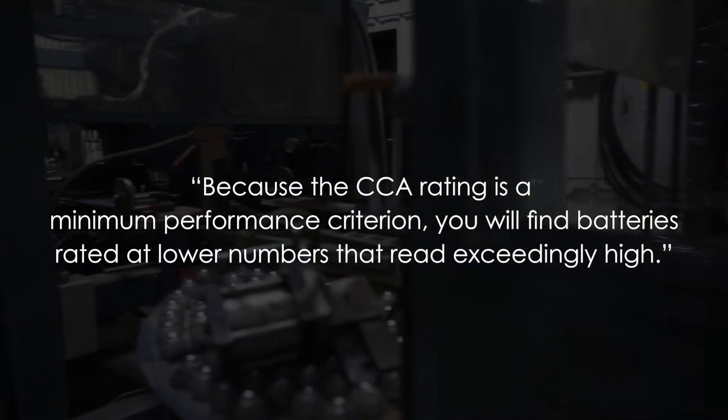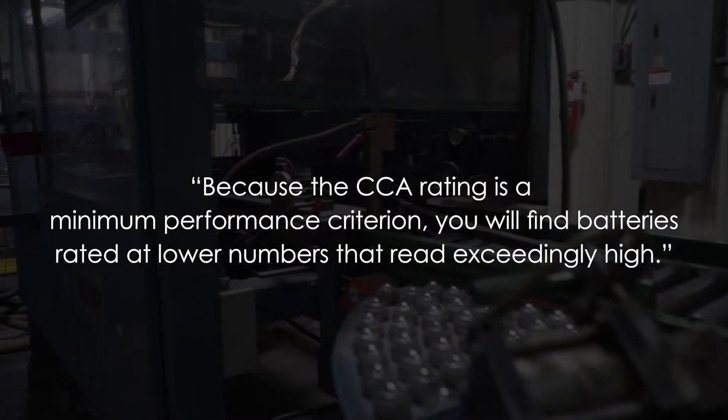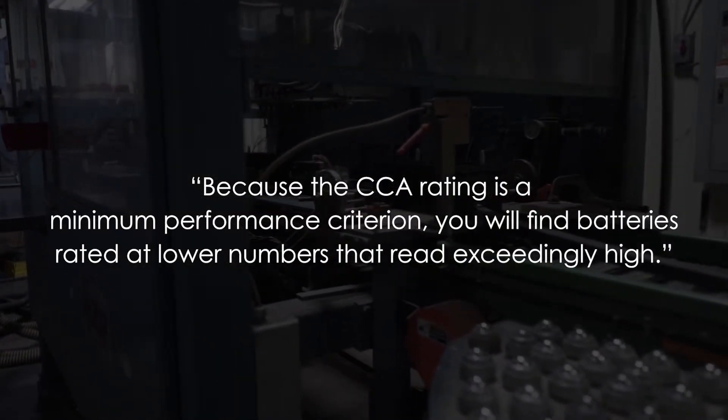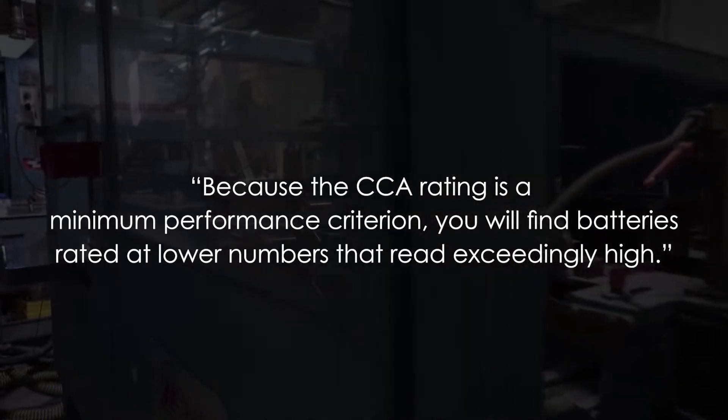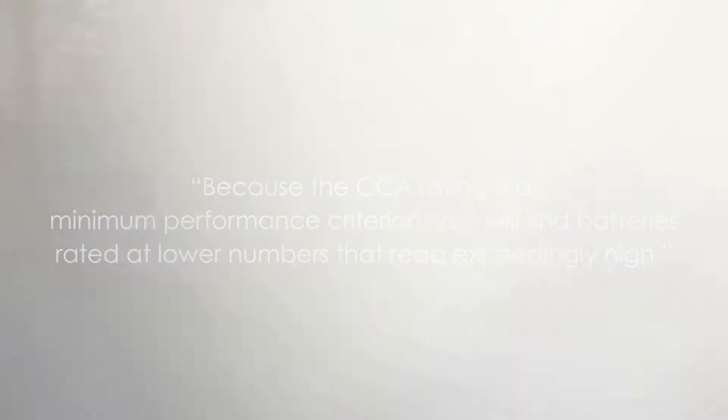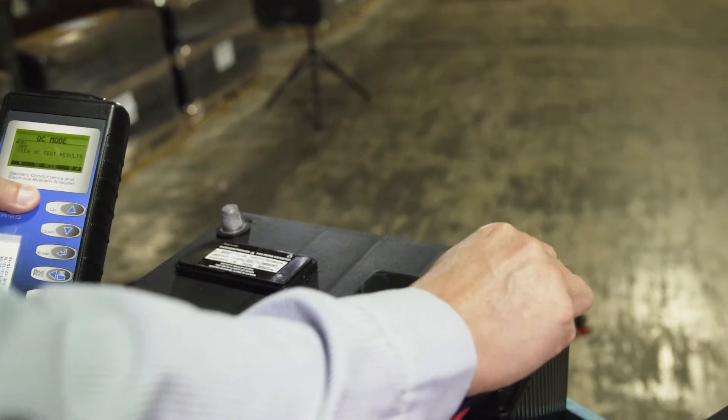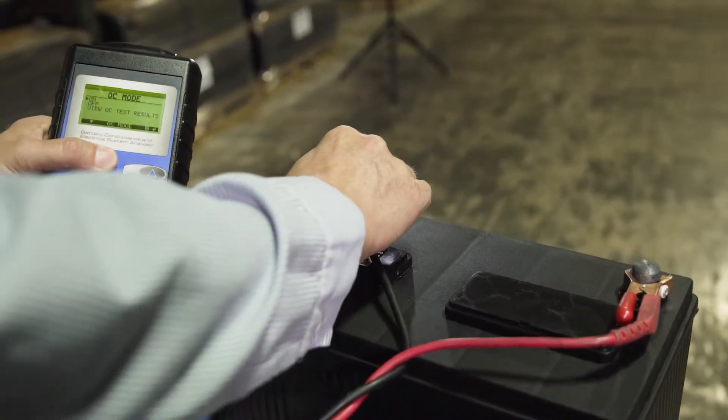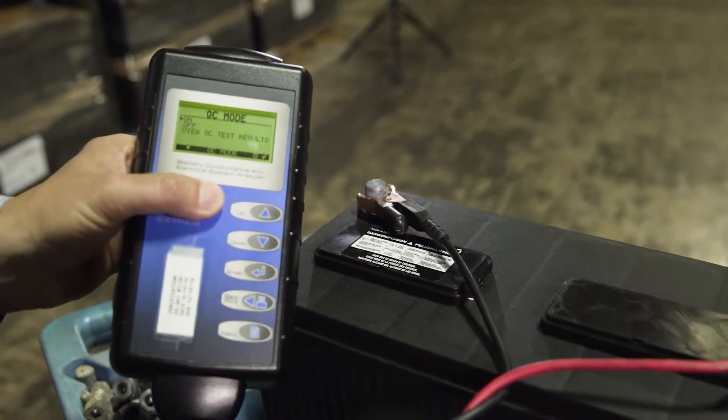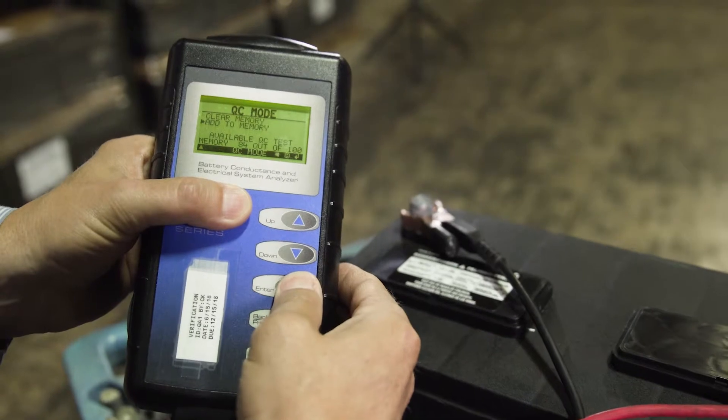One tester manufacturer states, because the CCA rating is a minimum performance criterion, you will find batteries rated at lower numbers that read exceedingly high. While these testers accurately convey the conductance or resistance of the materials, they cannot accurately return a complete picture of battery capacity.